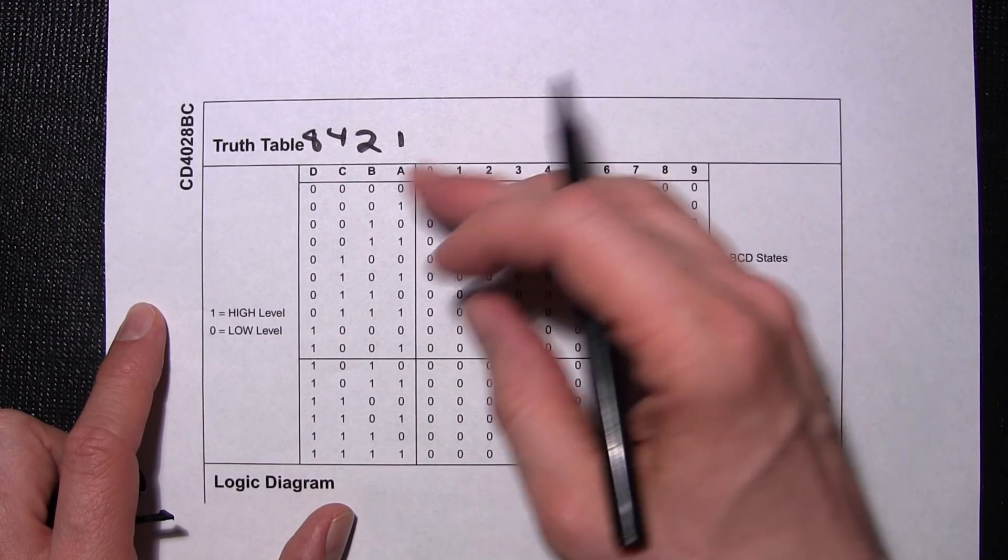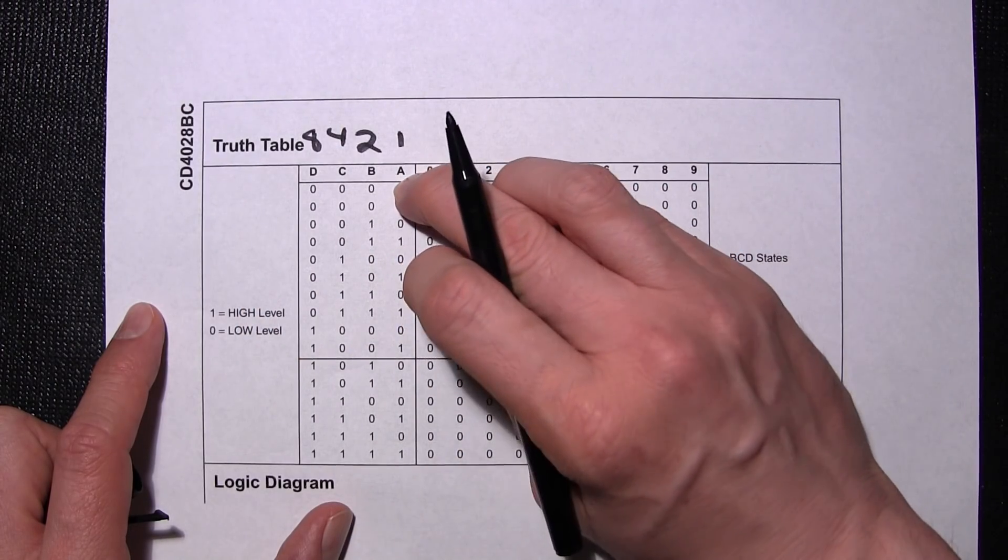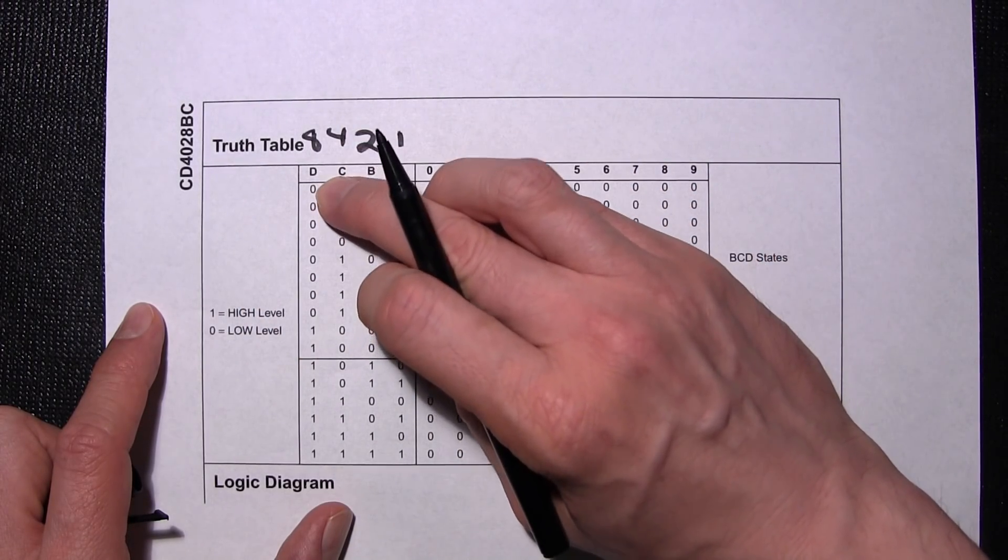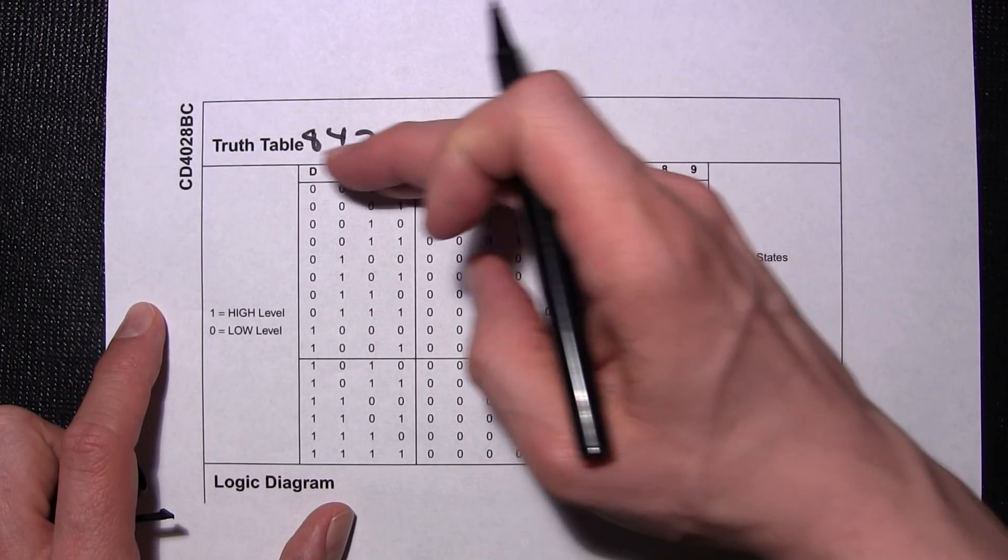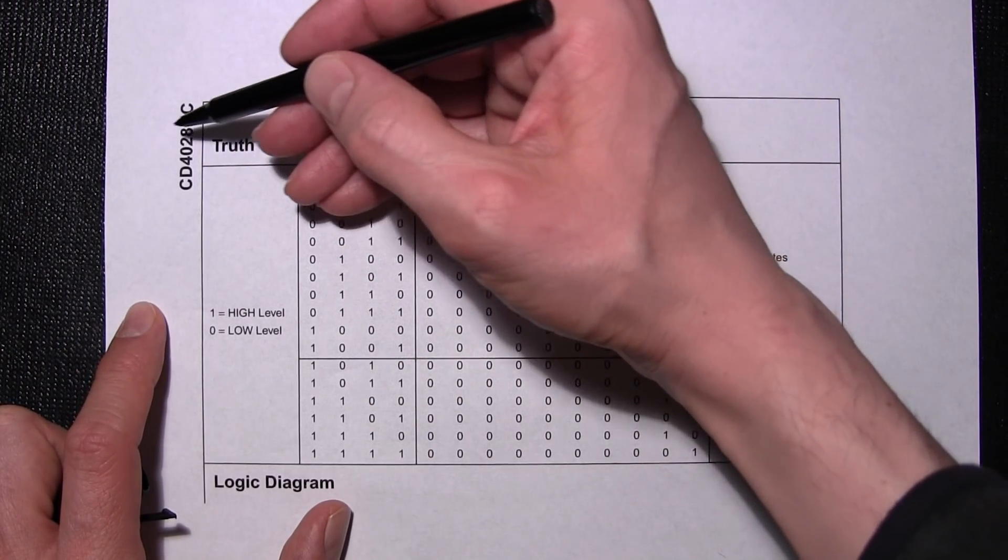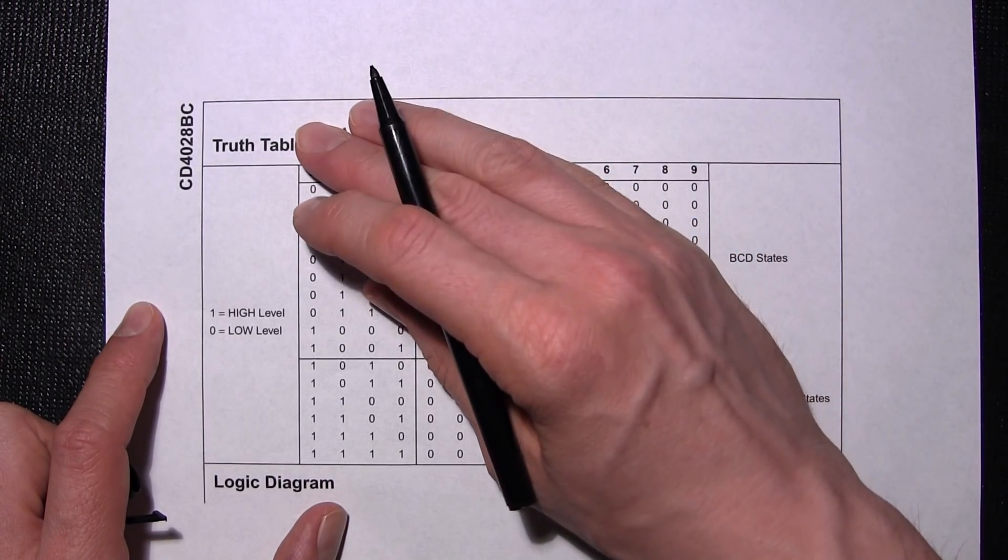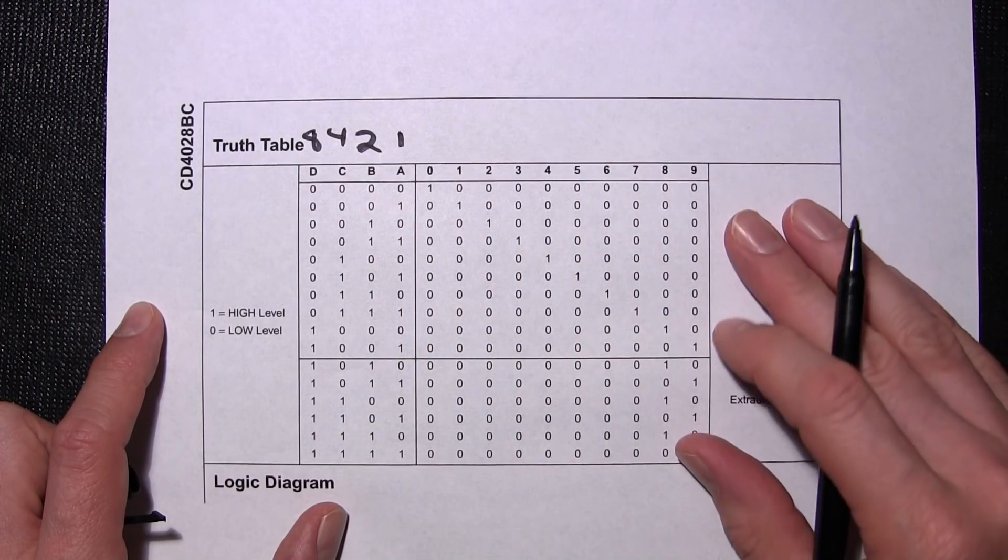And whenever you see this, D, C, B, A, in any order on an IC like this, A is always 1, B is 2, C is 4, D is 8, and if you had more of these it would be 1, 2, 4, 8, 16, 32, 64, and so on. So we're only dealing with 4 here, so we'll just keep this simple.